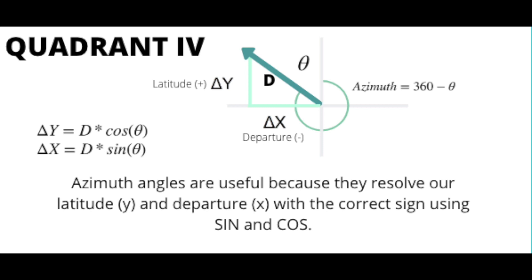Let's go over some azimuth angle conversions. We're looking at quadrant number four right here. This is important because as we find the azimuth angles we can more easily solve the problem instead of using it quadrant by quadrant. In the previous example we looked at equations with the calculator such as NW district, and what was interesting about those equations was that we had to add either a positive or negative sign.